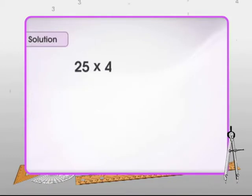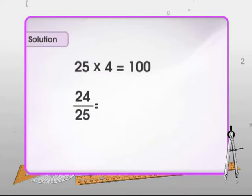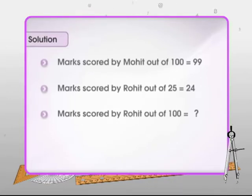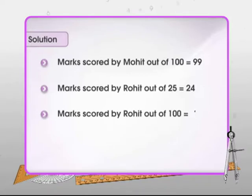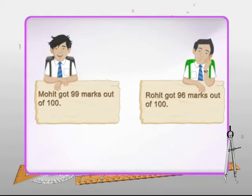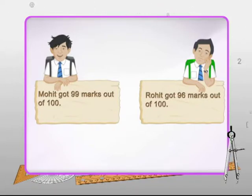We know 25 × 4 = 100, so 24/25 = (24 × 4)/(25 × 4) = 96/100. This means Rohit got 96 marks out of 100. Thus, Mohit has done better than Rohit. We have compared the performance of Mohit and Rohit by comparing their marks out of 100.